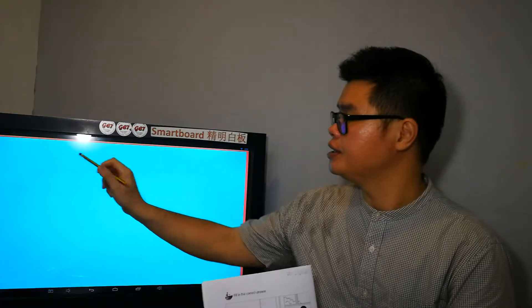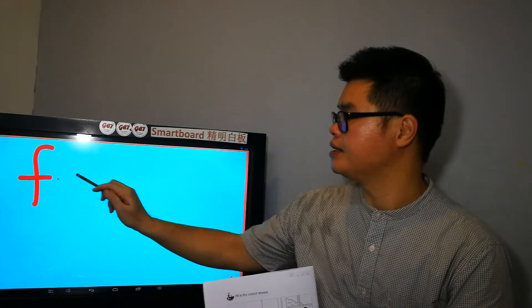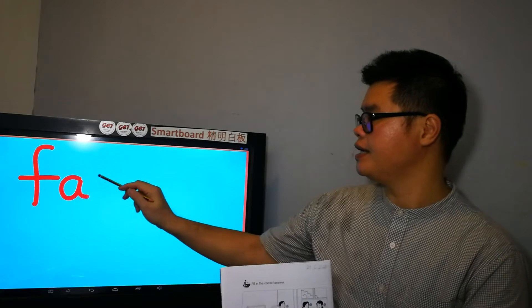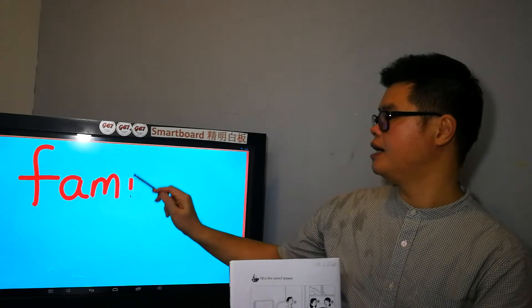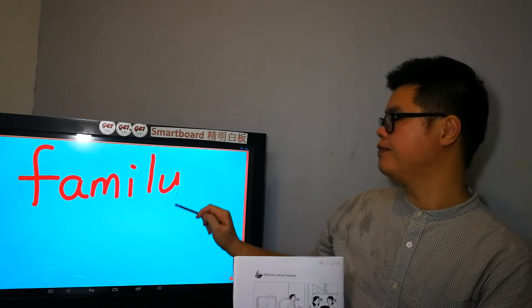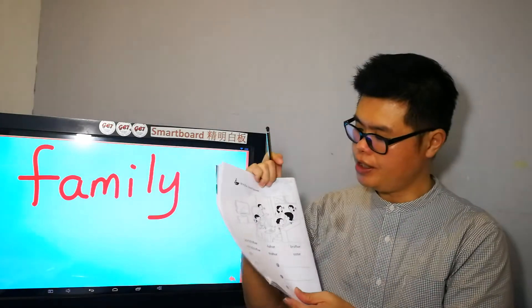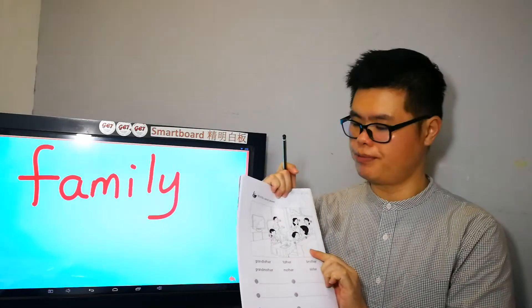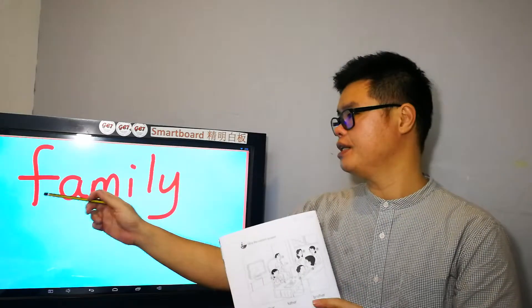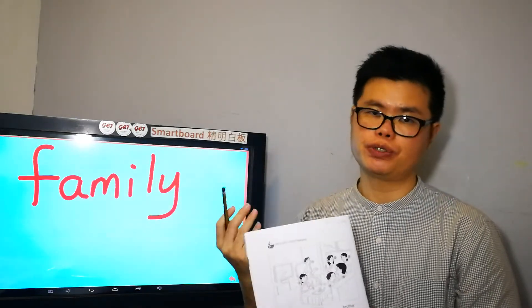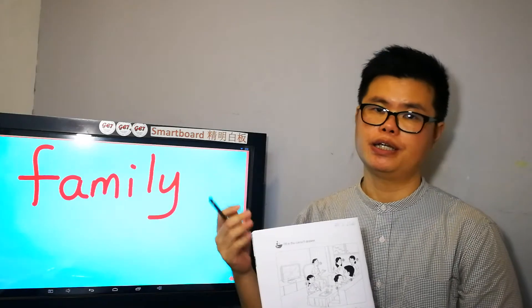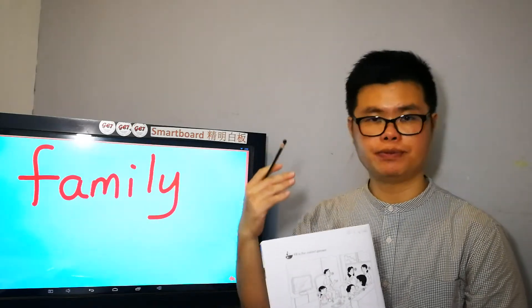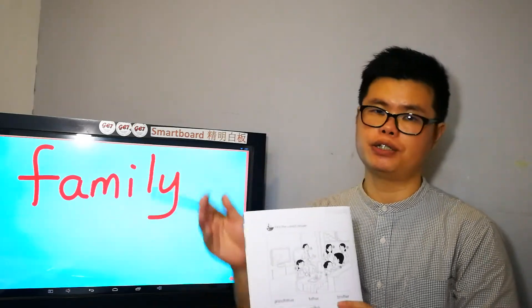We shall learn family. Alright, F-A-M-I-L-Y, family. Okay? A family consists of several members. A family are those people who live very closely with us. Alright? They take care of us, and in return, we should take care of them.